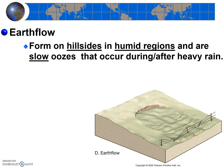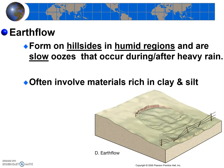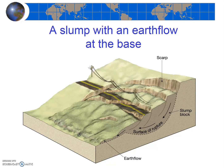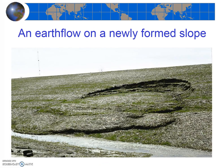Earth flows occur along hillsides and are essentially slow oozes that occur after heavy rains. They often involve materials rich in clay and silt that can hold a lot of water, and eventually the material becomes so waterlogged that it just oozes down the hillside. Earth flows are generally quite slow. Here's a cartoon picture of an earth flow at the base of a slump, and here's a very similar real-life picture of an earth flow.